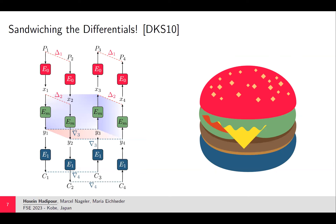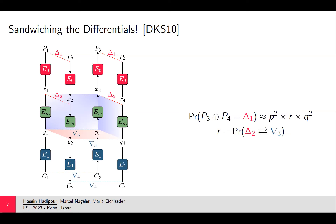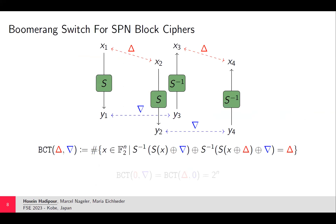That is why the sandwich distinguisher was proposed: it adds an additional part in the middle to model the dependency between upper and lower trails. A sandwich distinguisher is composed of three sub-distinguishers: two basic differential distinguishers at top and bottom, and a small boomerang distinguisher in the middle. If the probabilities of the top and bottom differentials are p and q, and the middle boomerang probability is r, the overall sandwich probability is p²q²r.